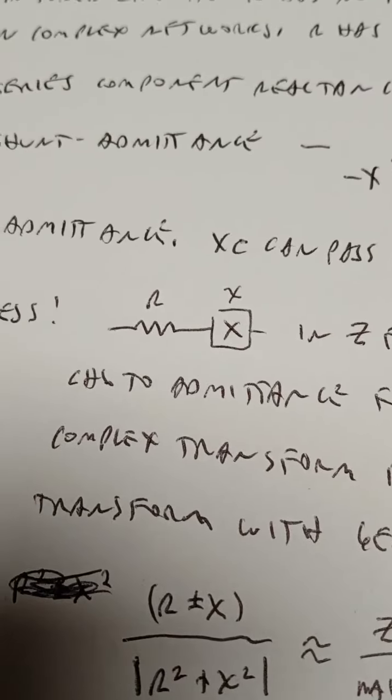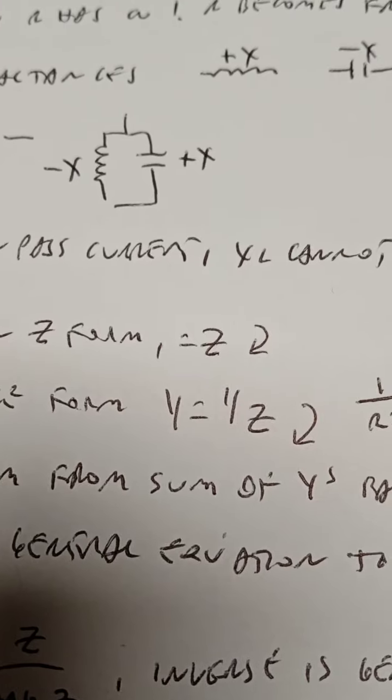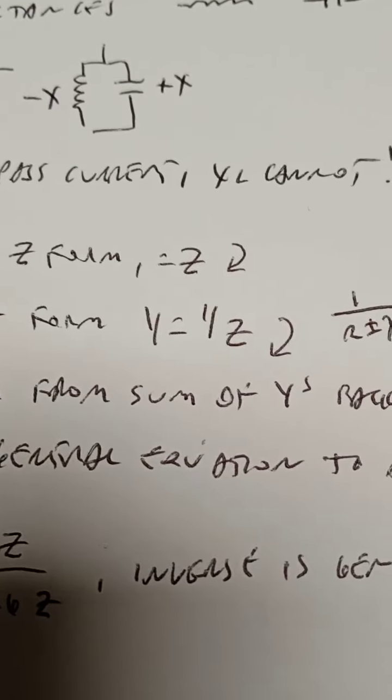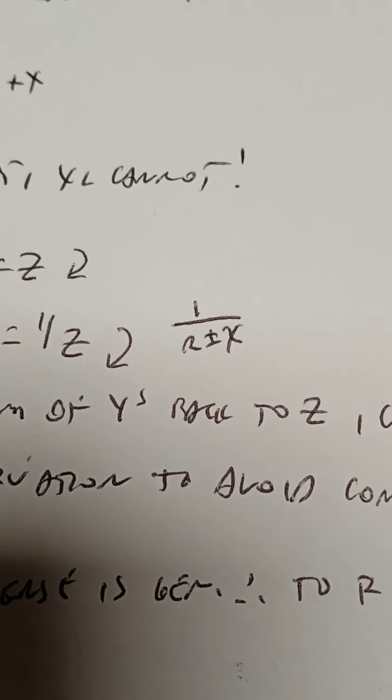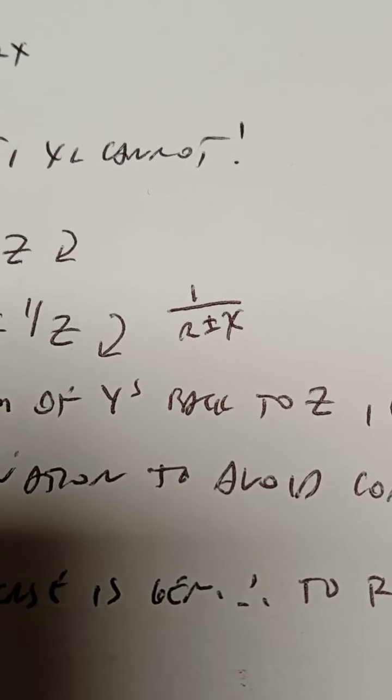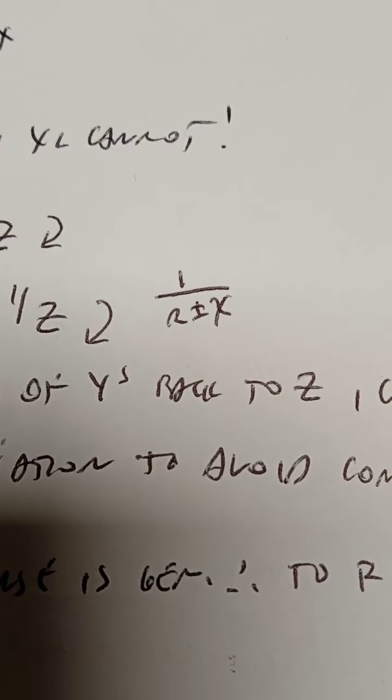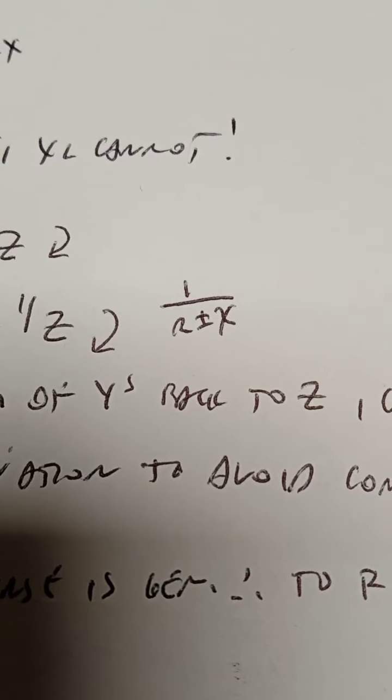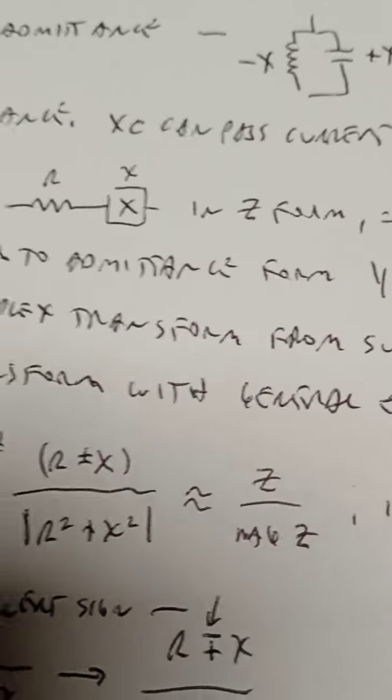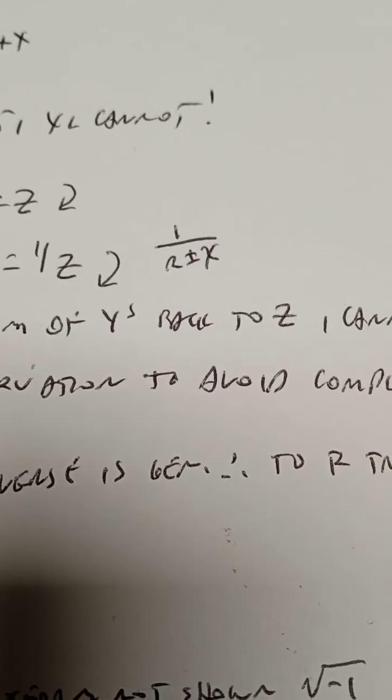The process to do this calculation: assume a series R and a series X in impedance form, that's Z. Change that to admittance. Y is 1 over Z. So that becomes 1 over R plus or minus X. Now notice very carefully the plus over the minus. That's a conventional form. Plus is inductive, minus is capacitive. We've just taken that series impedance form with plus over minus and inverted it mathematically.